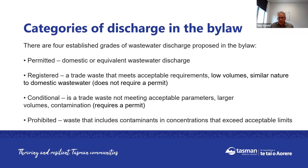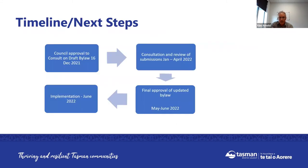The fourth category is prohibited waste. It doesn't meet the parameters and is likely to be harmful to the network and the environment. This includes stormwater inflow, which is a prohibited discharge.